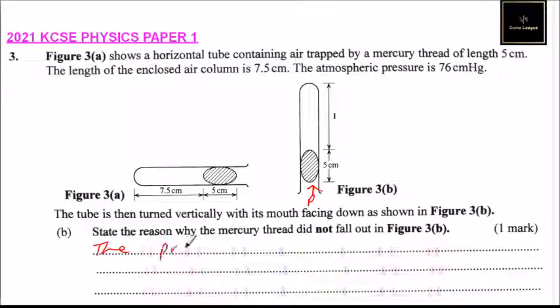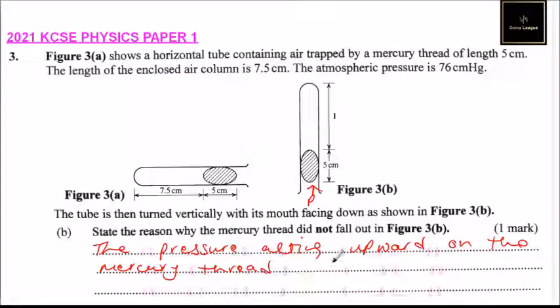We write the pressure acting upwards on the mercury. The mercury thread is greater than the downward pressure due to the air column.